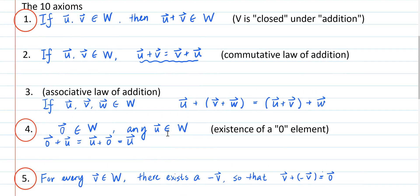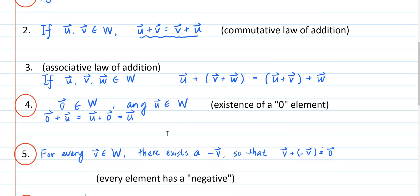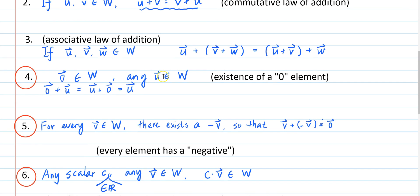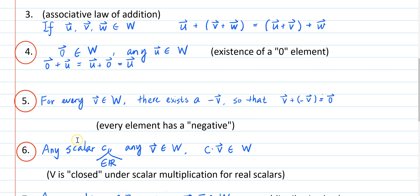We're going to further reduce that to verifying only 2 axioms, axiom 1 and axiom 6. The reason is that once we have verified axiom 6, then axioms 4 and 5 are guaranteed to be true.